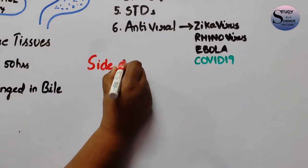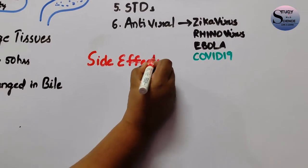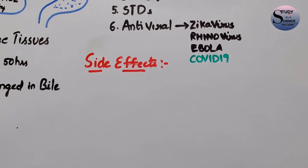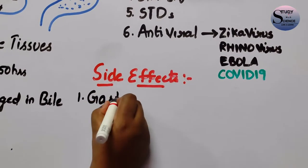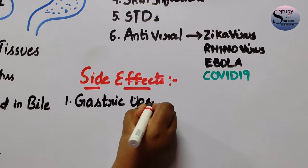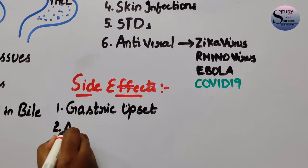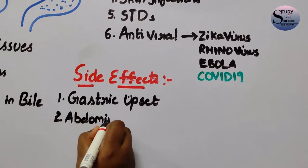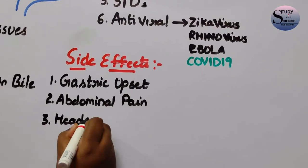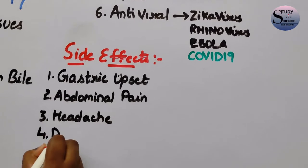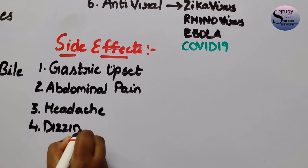The side effects of this drug include gastric upset, abdominal pain, headache, and dizziness.